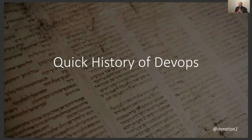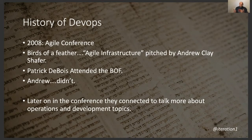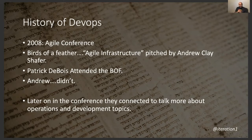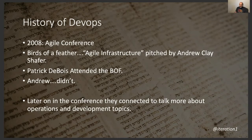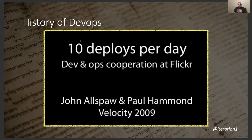Let's do a quick history of DevOps. Most folks have probably heard of this before, but DevOps kind of began in 2008 at the Agile conference where Andrew Clay Schaefer was talking about this idea of Agile infrastructure. Patrick Dubois attended the Birds of a Feather session and was really interested in understanding Andrew's thoughts. They talked at the conference and were really interested in the ideas of operations and development topics and how they come together. Also in 2009, John Allspaw had the famous 10 deploys per day presentation at Flickr, and everybody in the audience was really wondering — they're actually deploying to production not just once a day but 10 times. That's pretty amazing.